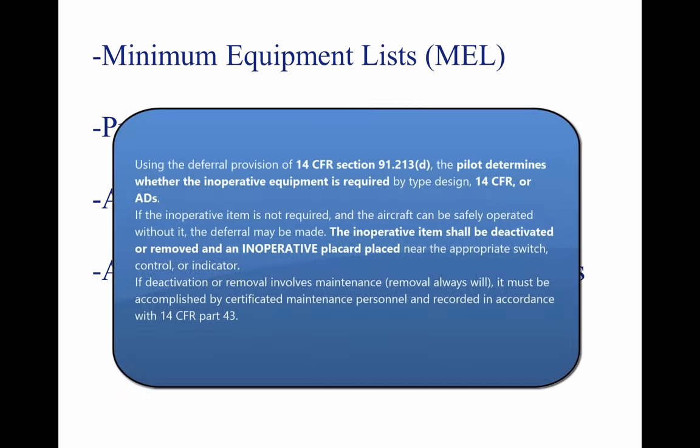Using the deferral provision of 14 CFR Section 91.213D, the pilot determines whether the inoperative equipment is required by type design, 14 CFR, or ADs. If the inoperative item is not required and the aircraft can safely be operated without it, the deferral may be made. The inoperative item shall be deactivated or removed, and an inoperative placard placed near the appropriate switch, control, or indicator. If deactivation or removal involves maintenance, it must be accomplished by certificated maintenance personnel and recorded in accordance with 14 CFR Part 43.